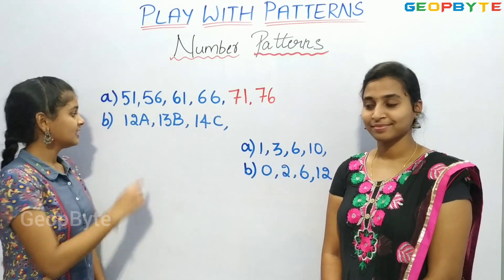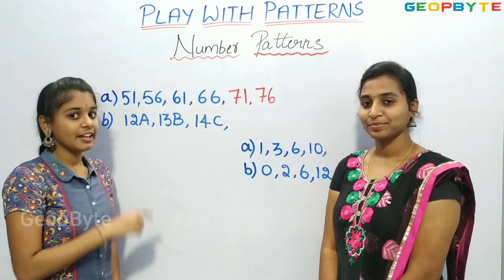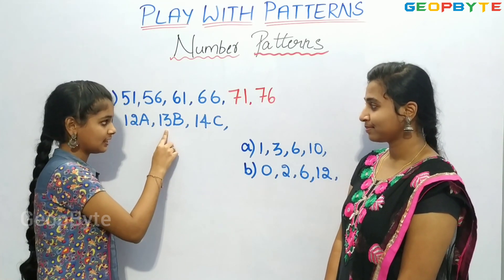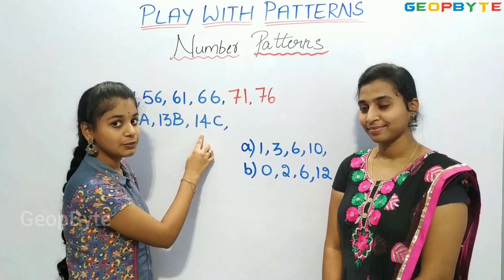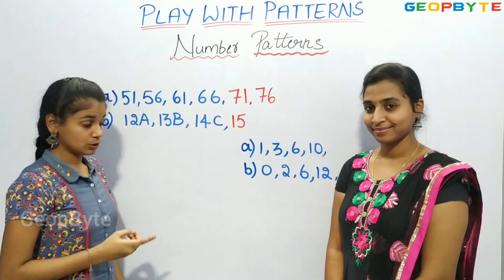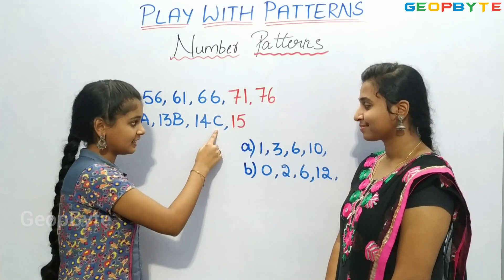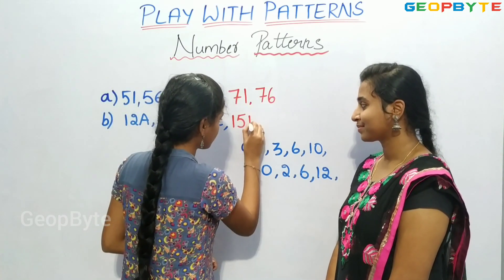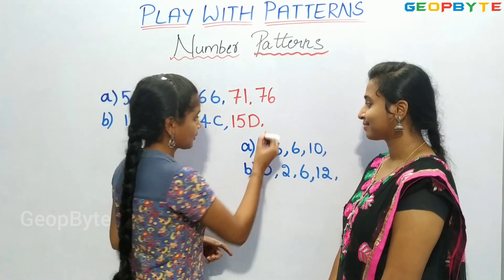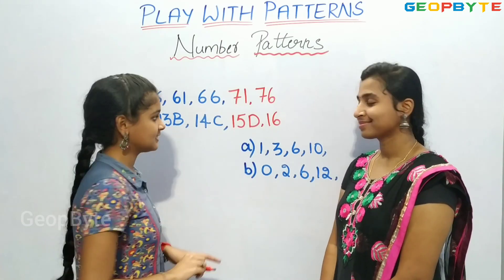Now let us see this combination: 12A, 13B, 14C. If you observe carefully, after 12 there is 13, after 13 there is 14, after 14 it is 15. So the numbers go 15, 16. And also: after A comes B, after B comes C, after C comes D, after D comes E. So the next term is 16E.